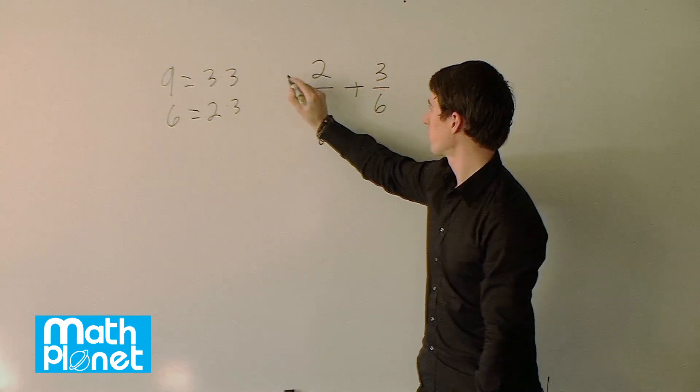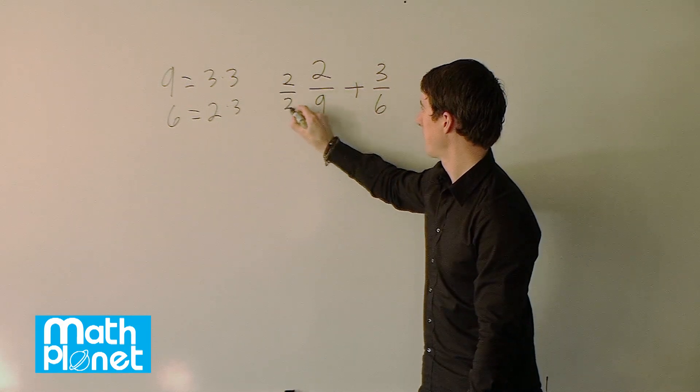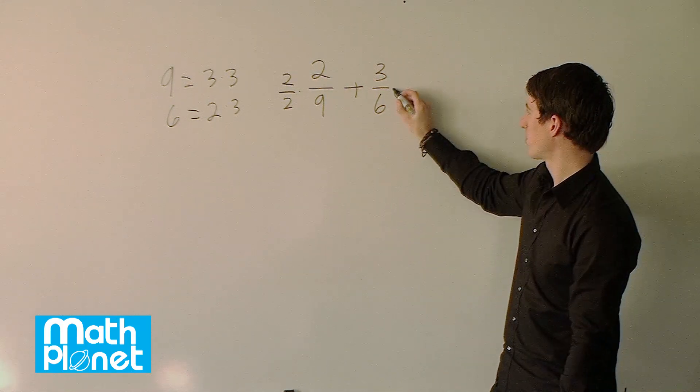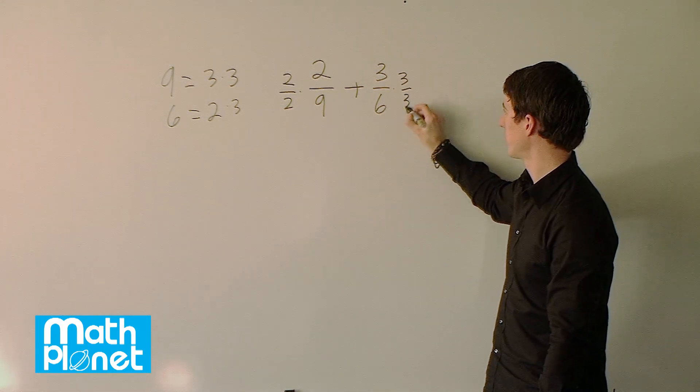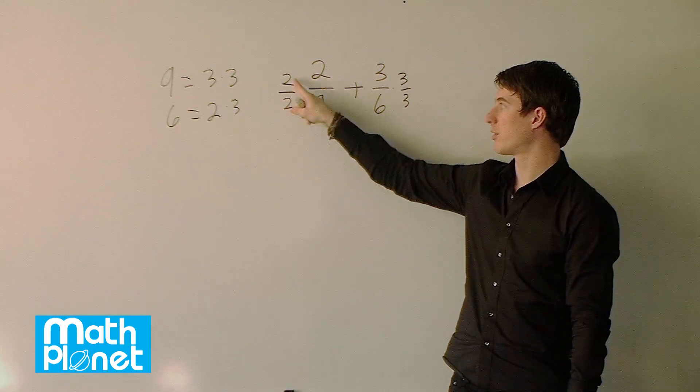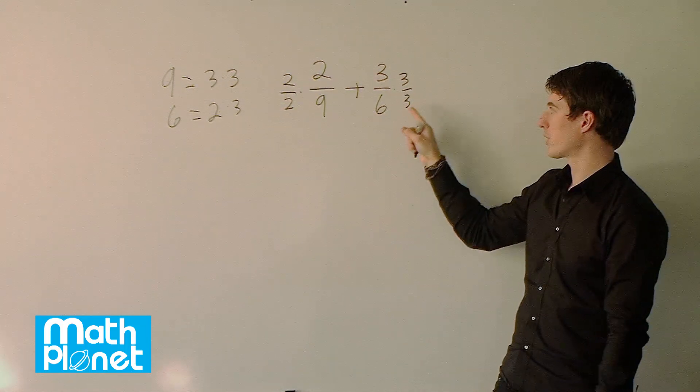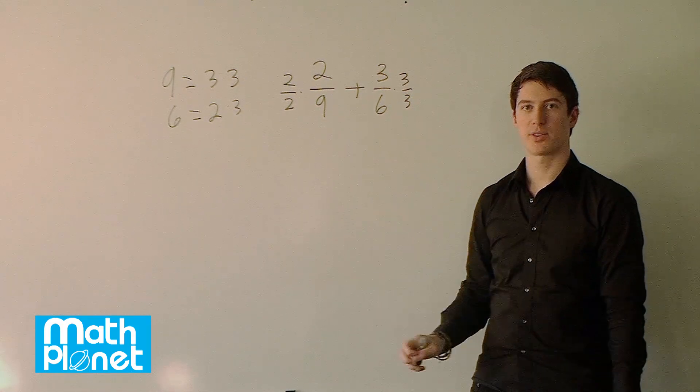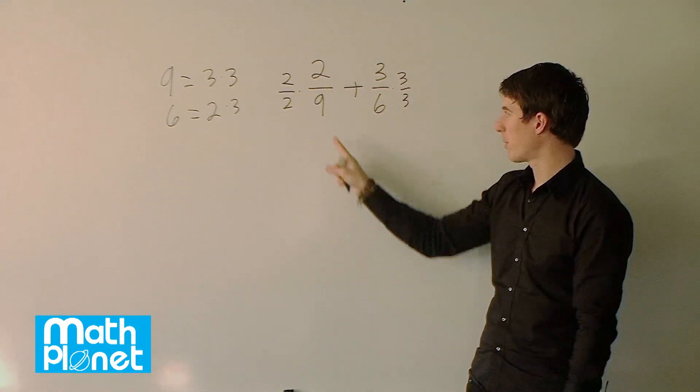So we'll multiply 2 over 2 here and we'll multiply this by 3 over 3 here. So that doesn't change anything. We're only multiplying by 1 after all. 2 over 2 is 1 and 3 over 3 is 1. But now we'll multiply it out, see what we get and we'll probably have a common denominator.